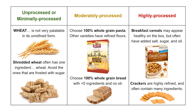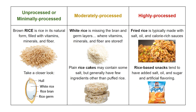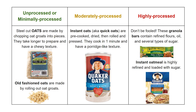Same idea with wheat. Shredded wheat cereal and unfrosted oatmeal are going to be our least processed options. As we process further, we get things like granola cereals, crackers, and cookies, which are not great options. With rice, brown is best. For oatmeal, our best options are steel-cut oats or old-fashioned oats — minimally processed. We want to avoid instant oats and refined oatmeal snacks.